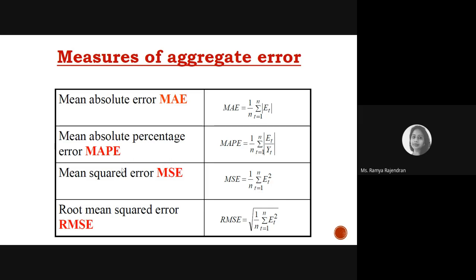Mean Absolute Error (MAE) is one of the foremost accuracy measures used — it is the average absolute error, with the formula: summation of error divided by n. Mean Absolute Percentage Error (MAPE) is the average absolute percentage error, with formula: summation of error divided by n times y, multiplied by 100. MSE is summation of error squared divided by n, and RMSE is the square root of MSE.